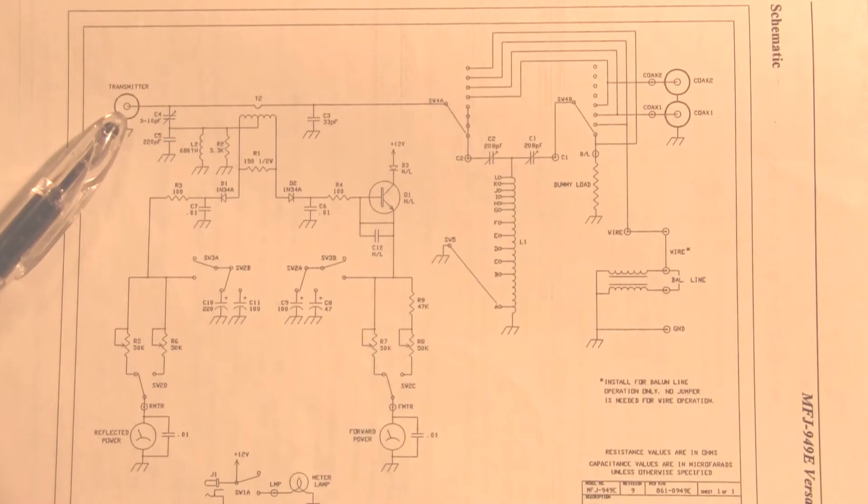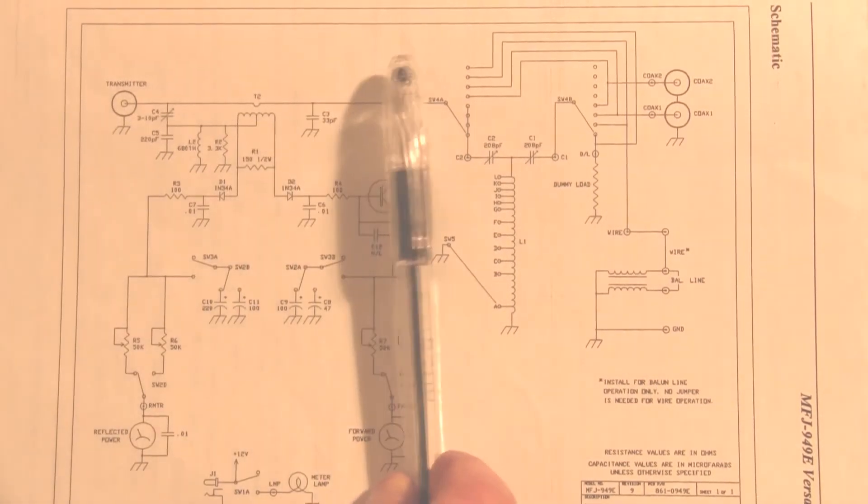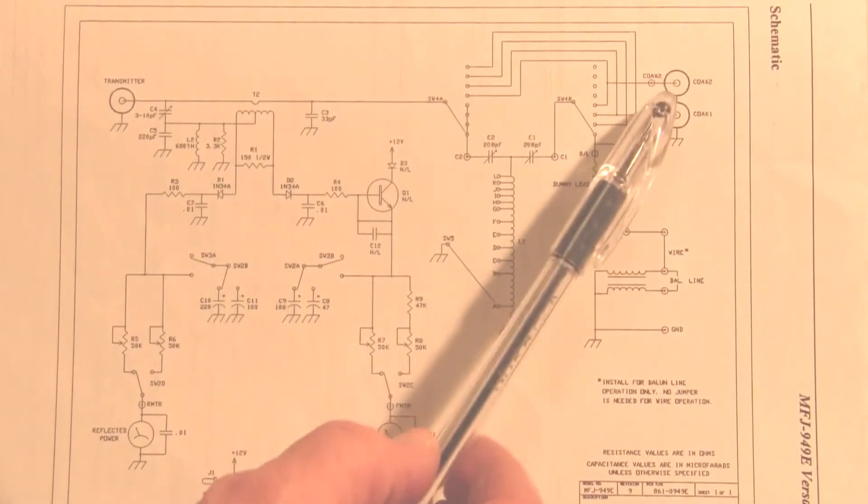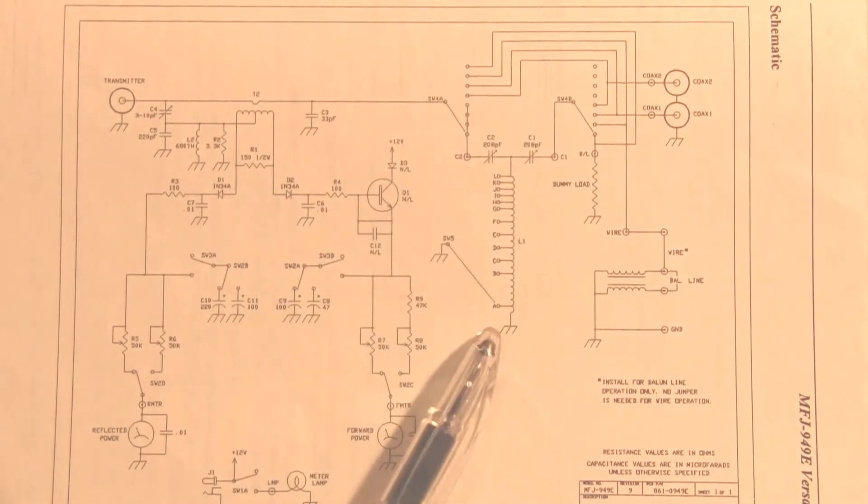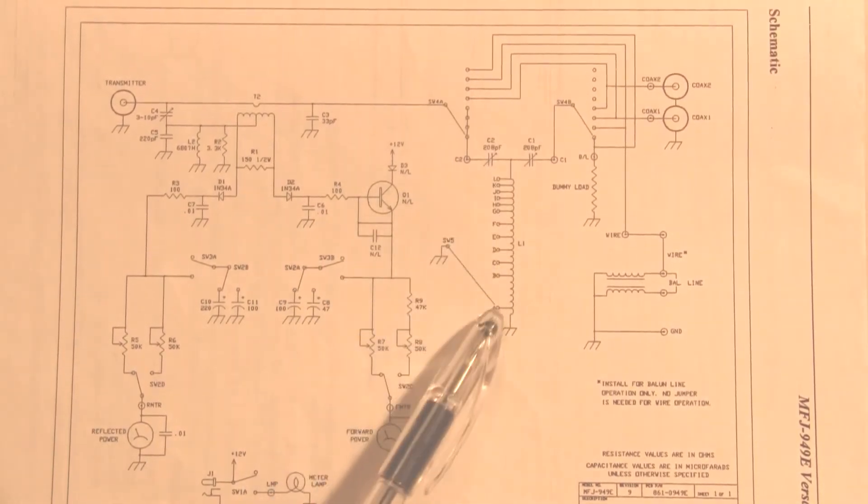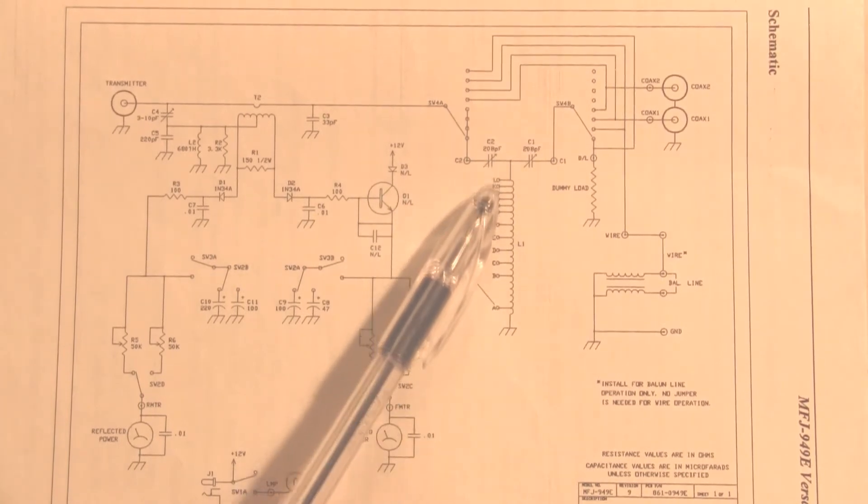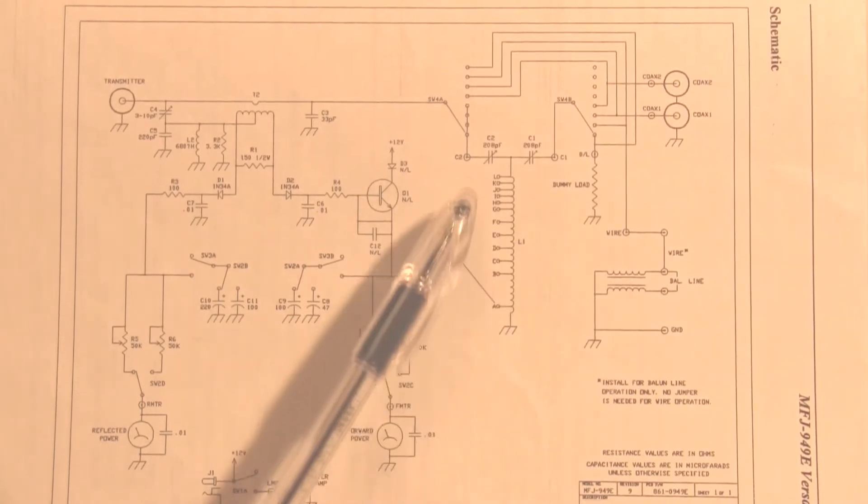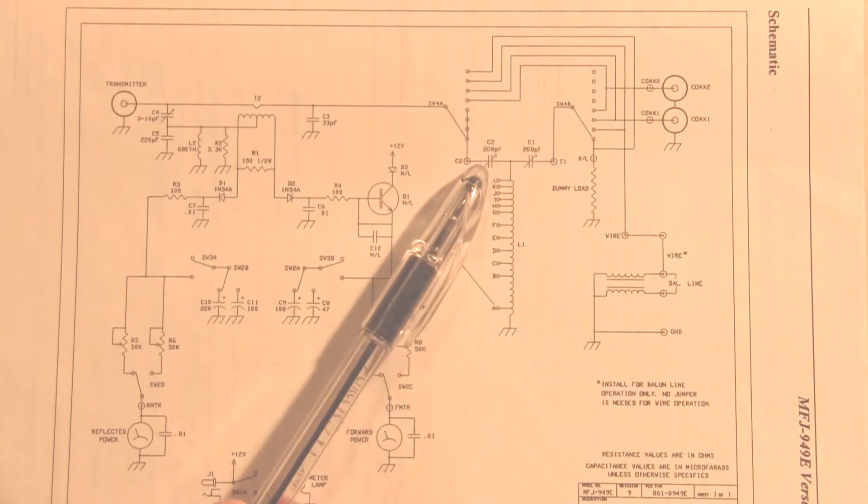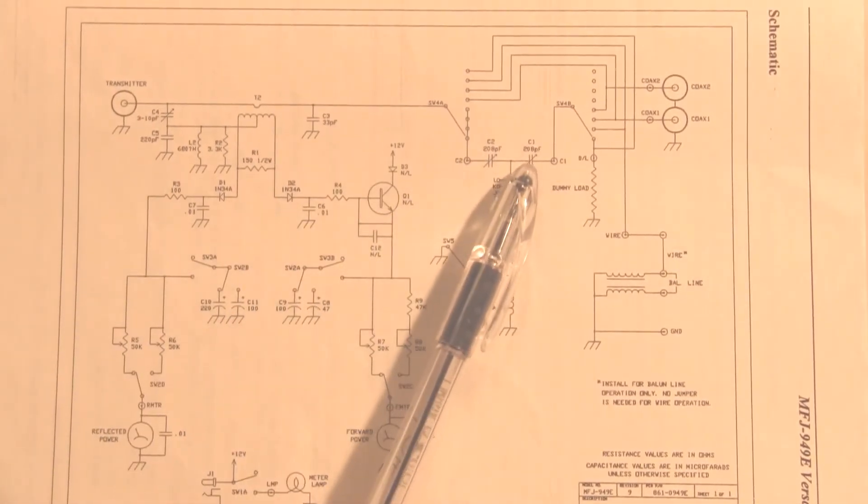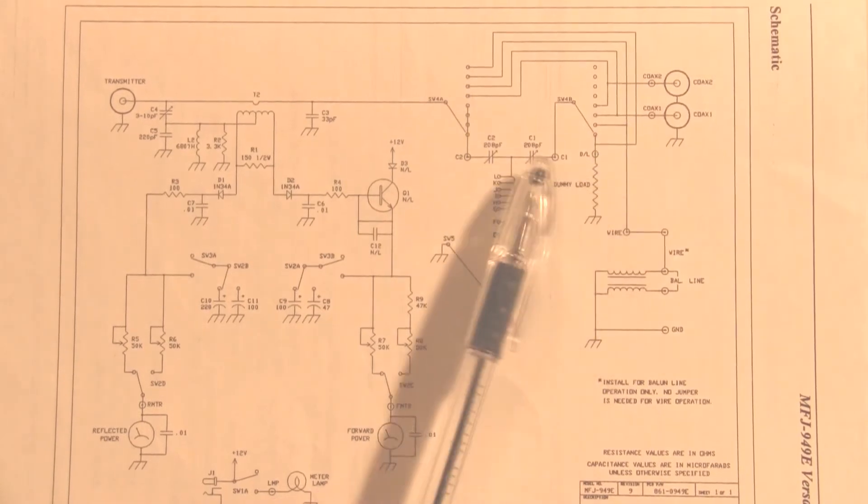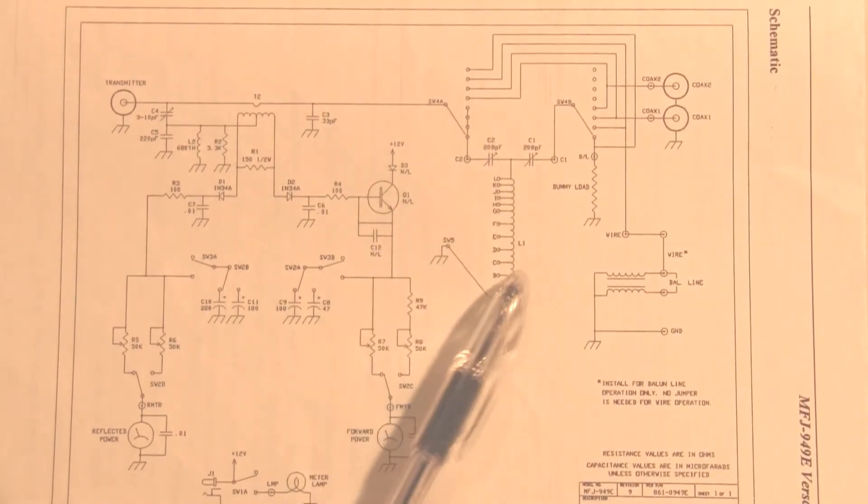Here's a transmitter input. Remember the SWR bridge is before the antenna. There are several outputs here, so there's switching on the outputs. But here's the T network we were just looking at. Here is the inductor with variable taps, so we get variable inductance. Here's the variable capacitor hooked to the transmitter. Here's a variable capacitor hooked to the output. So here's our basic tuning circuit, the T network.